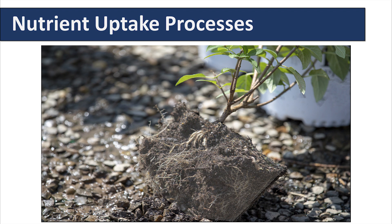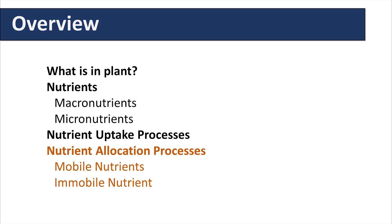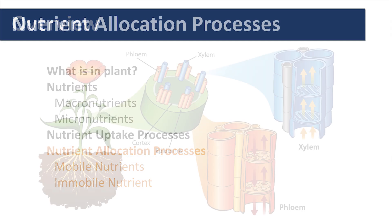Once nutrients are taken up into the plant, their mobility is the next thing to consider — specifically nutrient allocation processes and mobile versus immobile nutrients. Mobility means that the plant can move nutrients upward in the xylem from the roots, and that mobile nutrients can also move from older tissue through the phloem to younger growth.